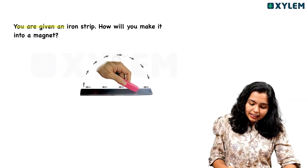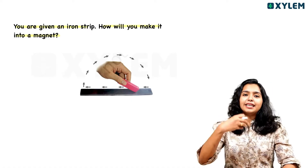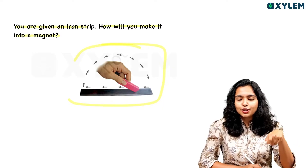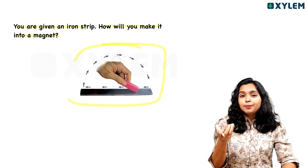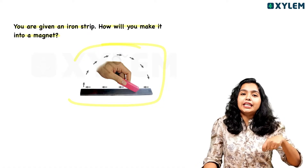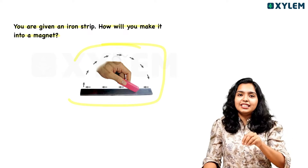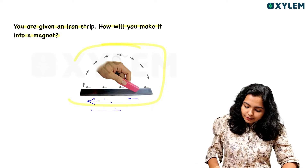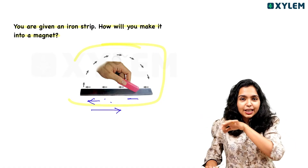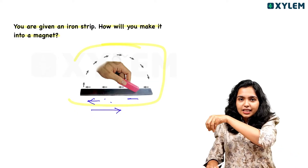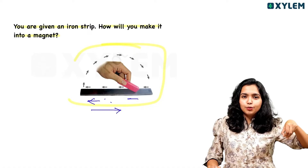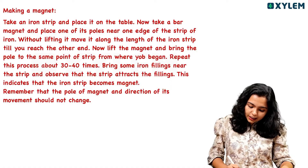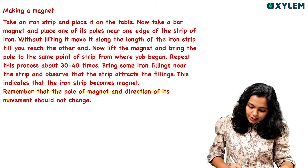The last question: you are given an iron strip. How will you make it into a magnet? You can make a magnet by stroking the iron strip with a bar magnet in one direction only. You must always move the magnet in the same direction. Remember that the pole of the magnet and the direction of its movement should not change.